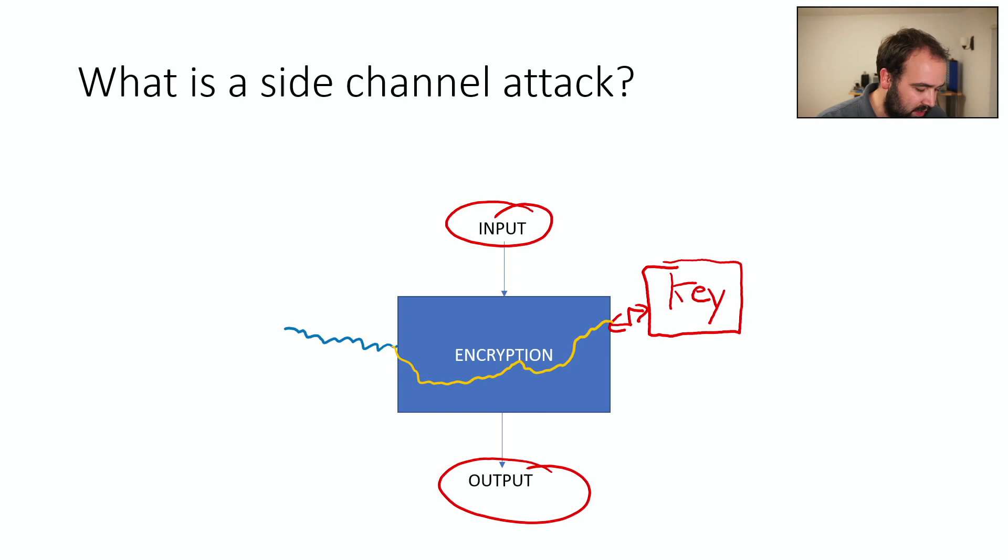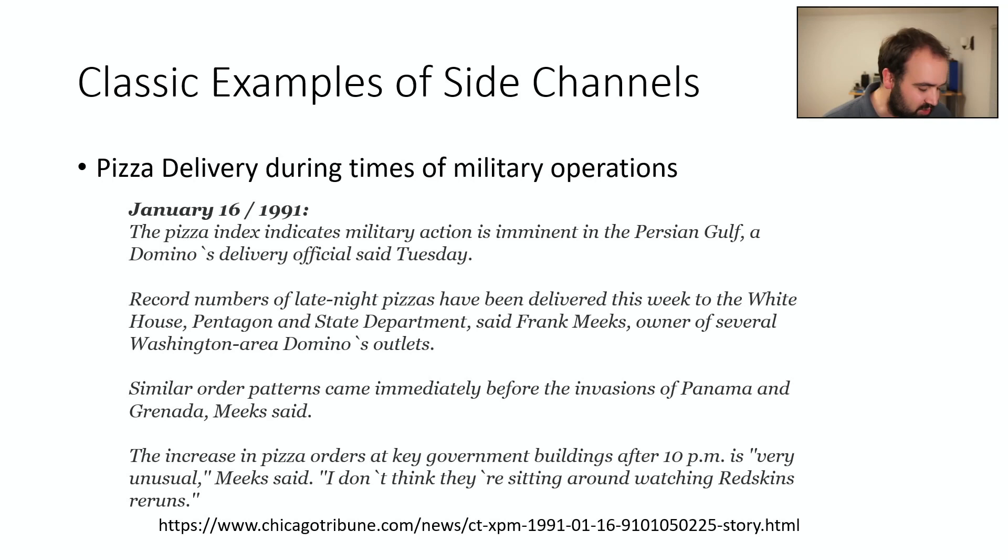There's lots of other examples of side channels in a very general sense. So a pretty classic one is this pizza side channel. And so there was something they started calling the pizza index, which is Domino's delivery in areas where the U.S. government had a heavy presence.